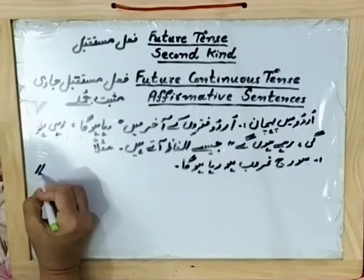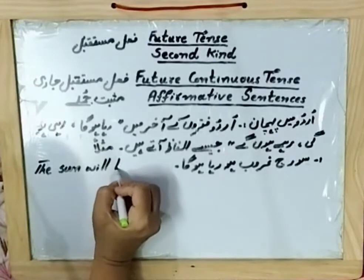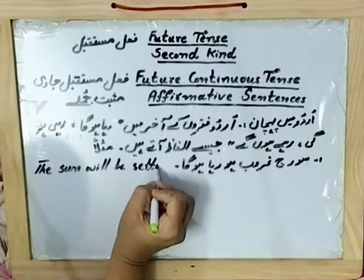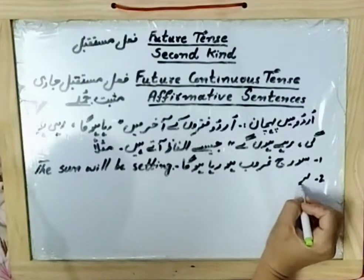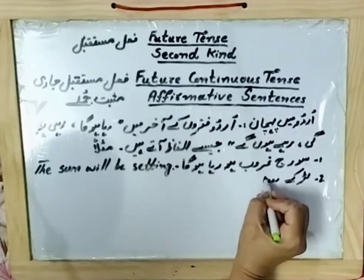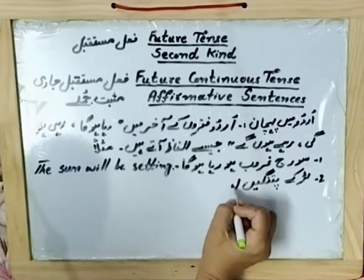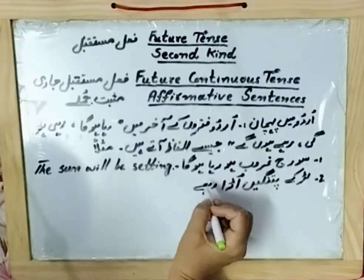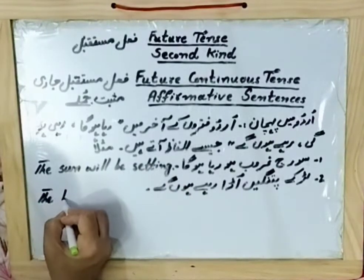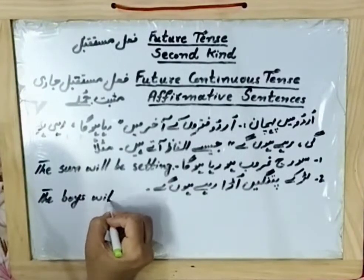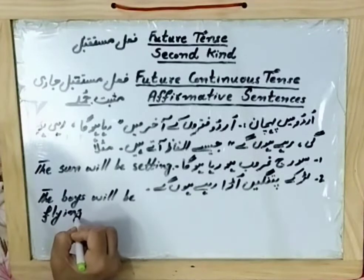The sun — 'dasani' — 'will be setting.' Another example: 'Nandke Patanke Uraa Raha Hongi Dabwais' — the kites will be flying. 'Will be flying kites.'